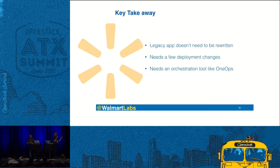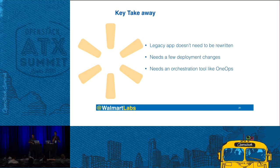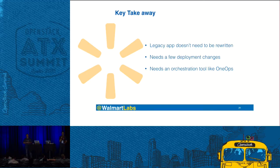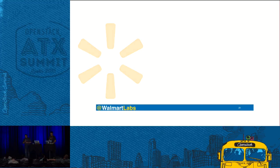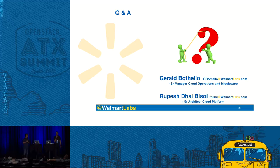The key takeaway on how we lifted and shifted comes down to three things: applications do not need to be rewritten and do not need to be microservice-based; there are some changes needed in the deployment mechanism, such as removing static IPs; and you definitely need some kind of orchestration tool, like OneOps. That pretty much wraps up the session — we'd like to open it for questions.